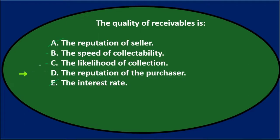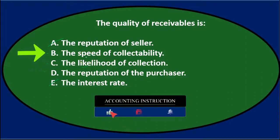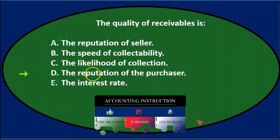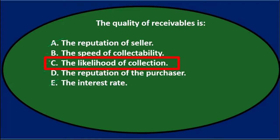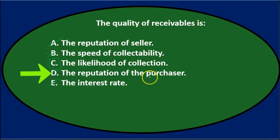So we're left with B, C, and D. The likelihood of collection is really the most concerning factor. Speed might matter — getting it faster could make some receivables higher quality — and the reputation of the purchaser may relate to collectability, but ultimately our major concern is collectability. C is the best answer. Final answer: the quality of receivables is C) the likelihood of collection.